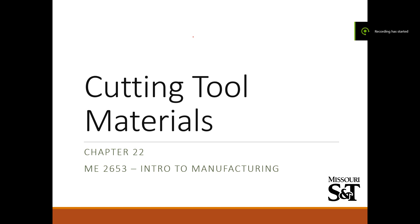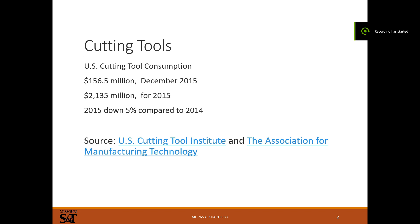Hello everyone. Today we're going to be talking about cutting tool materials. What you'll find when you start machining is that cutting tool choice is about the most important choice you can make when it comes to how fast you can make a part, what kind of materials you can machine, and the rate at which you can machine them. It's a huge industry, and cutting tools can get quite expensive, especially if you're breaking them.